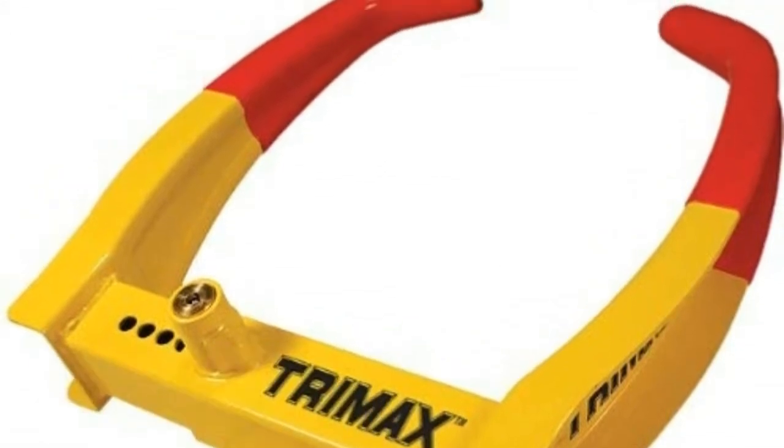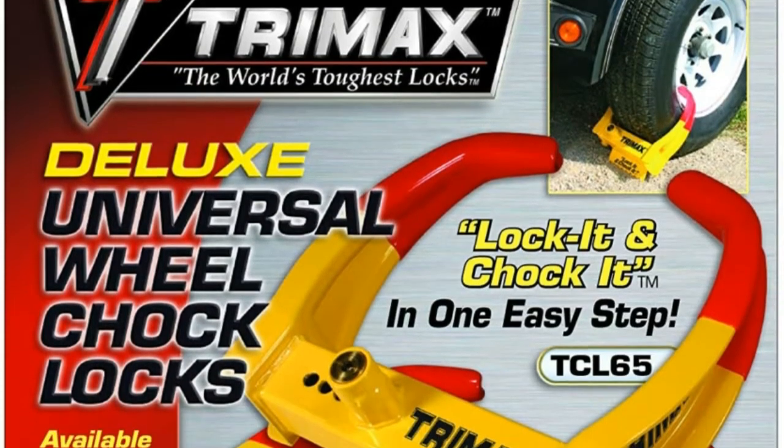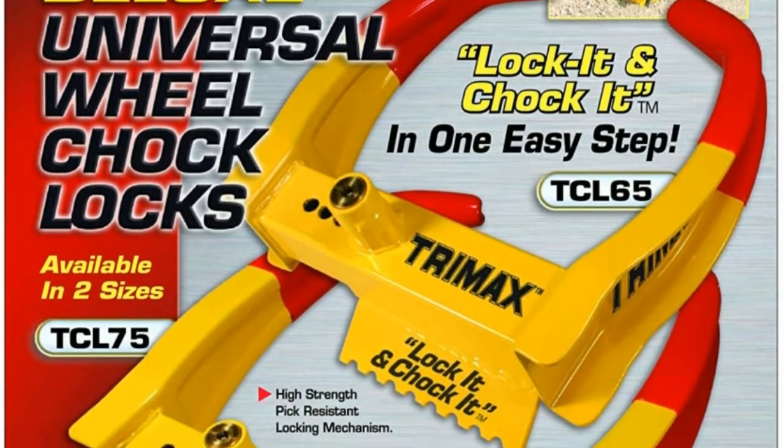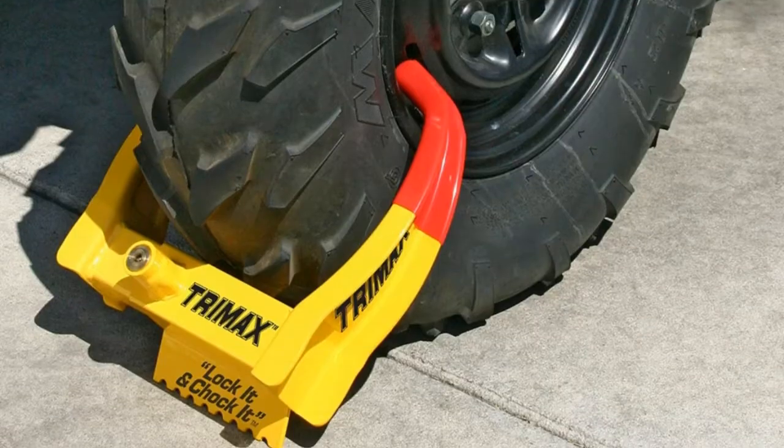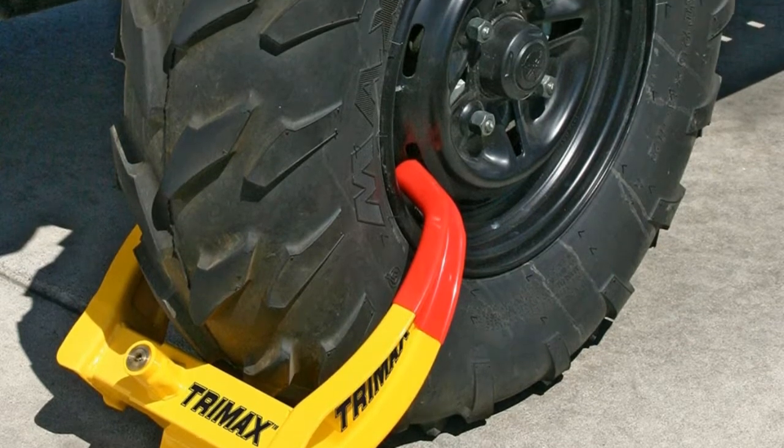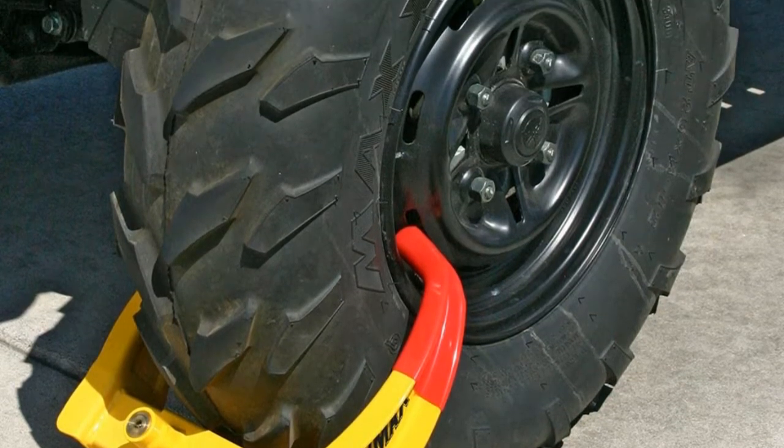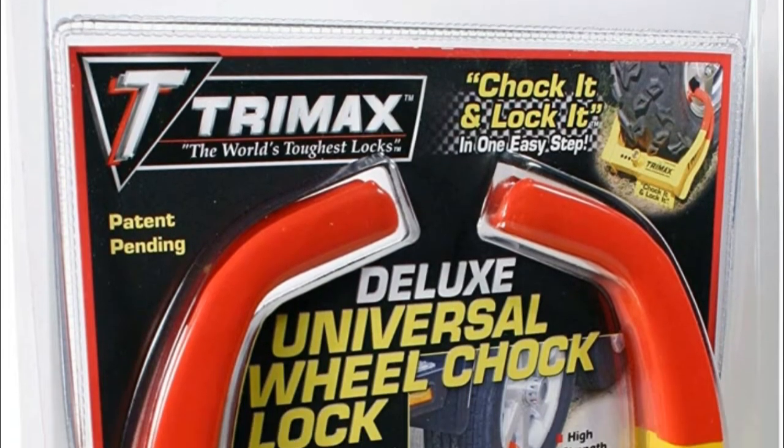The TCL 65 is a deluxe wheel chalk lock that can help you achieve maximum security quickly and easily for all unattended trailers, cars, boats, and more. Made of heavy gauge powder-coated steel, with a strong pick-resistant locking mechanism.